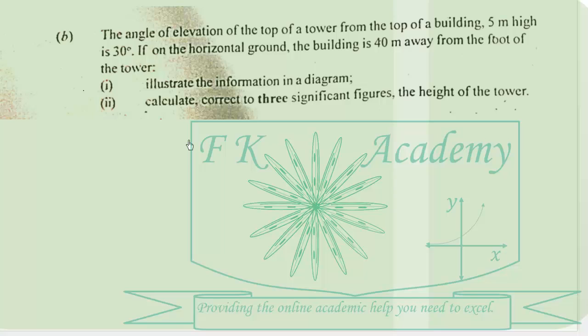The b part of question number 7. The angle of elevation of the top of a tower from the top of a building 5 meters high is 30 degrees. If on the horizontal ground the building is 40 meters away from the foot of the tower, illustrate the information in a diagram. Calculate correct to 3 significant figures the height of the tower.